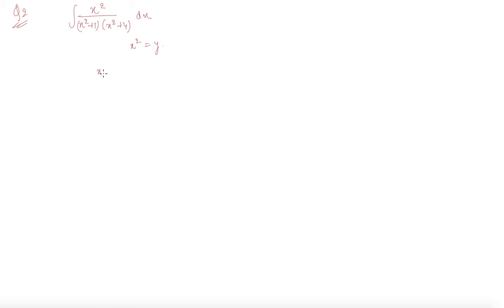So my expression becomes x square upon x square plus 1 into y square plus 4 equals y upon y plus 1 into y plus 4. And to break down this, I will get the value of a as minus 1 by 3 and b as 4 by 3.